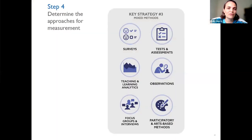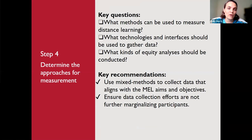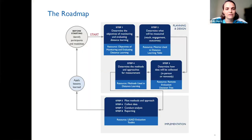The fourth step covers mixed methods — combining quantitative and qualitative data collection. Key questions include what methods can be used, what technologies should be used, and what kinds of equity analysis should be applied. The recommendation is to mix methods to collect data aligning with step one aims, and to ensure data collection efforts are not further marginalizing participants. The roadmap goes through all these steps with illustrative examples from case studies and countries around the world that participated in this evidence gathering.